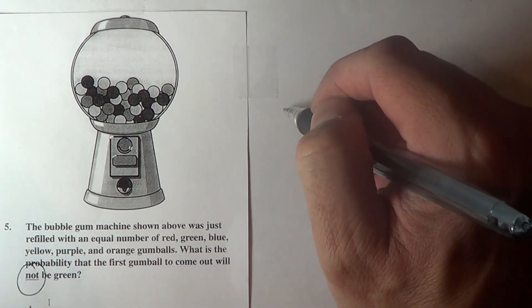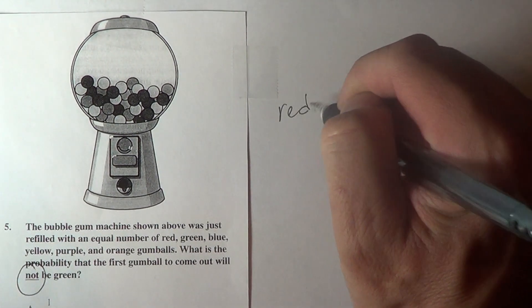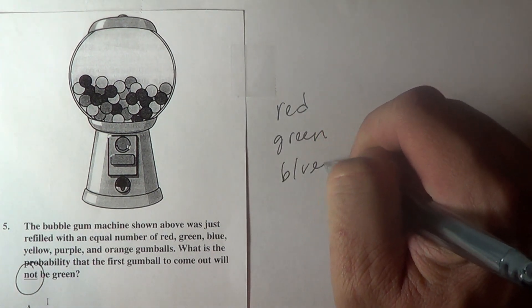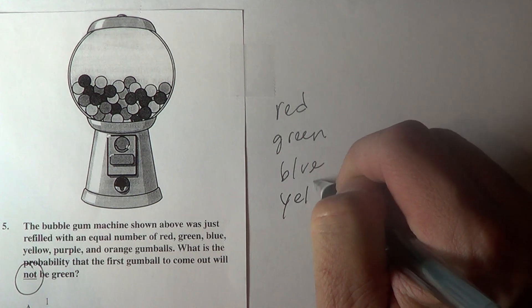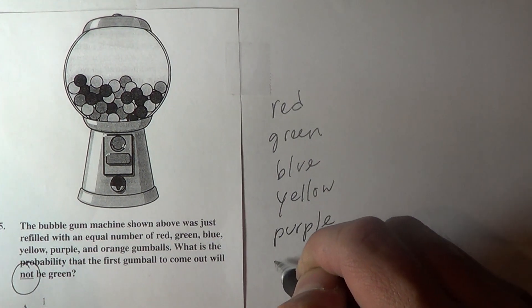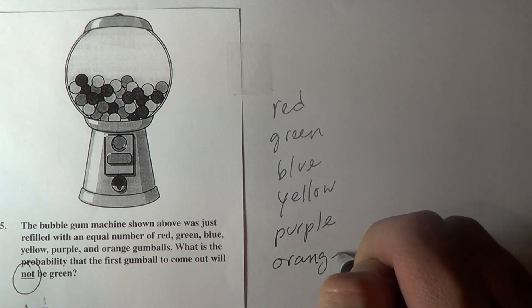So if we write out the colors we have red, green, blue, yellow, purple, and orange.